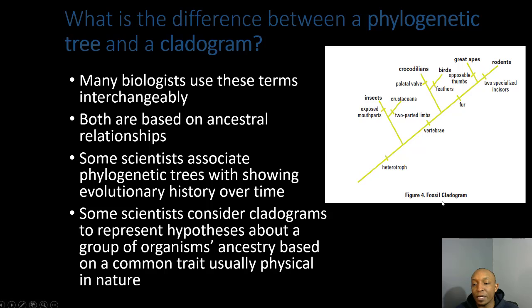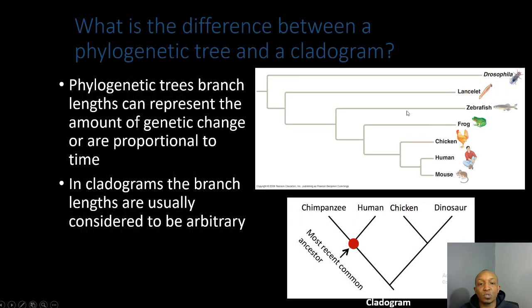Looking at this cladogram, organisms are separated by physical traits. Here's heterotroph at the base, then as we move up: vertebra meaning they have a backbone, then two-part limbs, fur, and feathers. Notice that these are all physical traits.